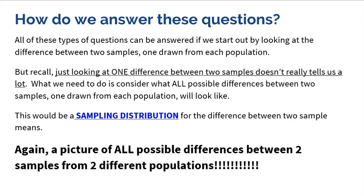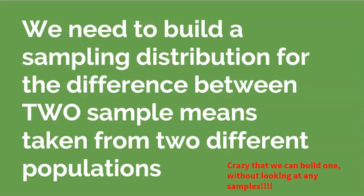A picture of all possible differences between two samples from two different populations is the sampling distribution, as long as we keep the sample size consistent. So if I look at 40 men, you need to look at 40 men. If I look at 35 women, you need to look at 35 women. We need to build a sampling distribution focused on the difference between two sample means taken from two different populations.